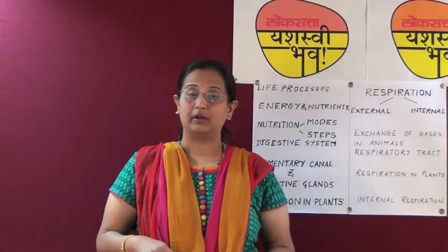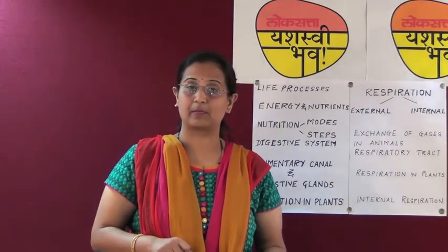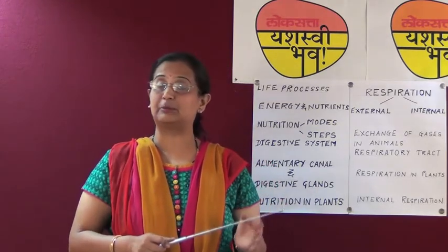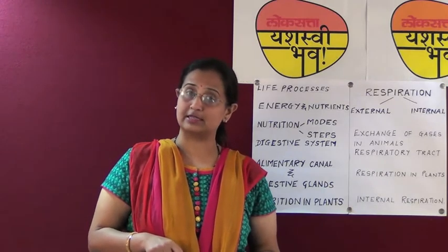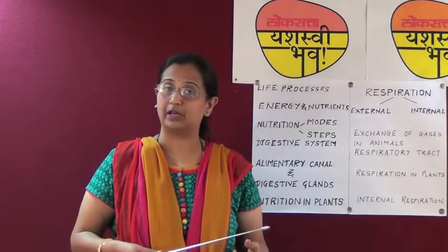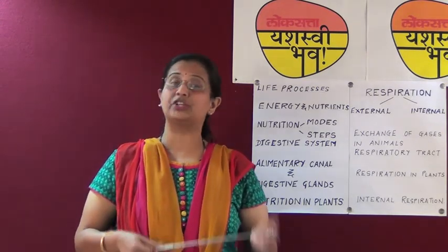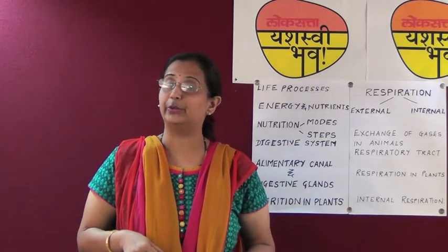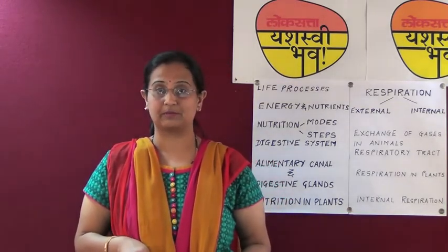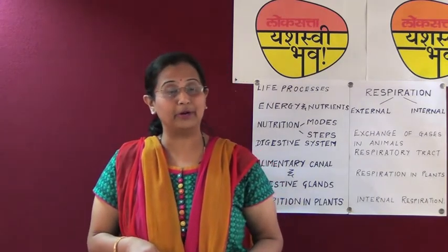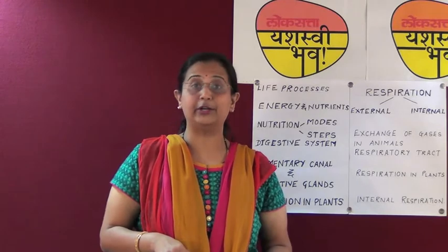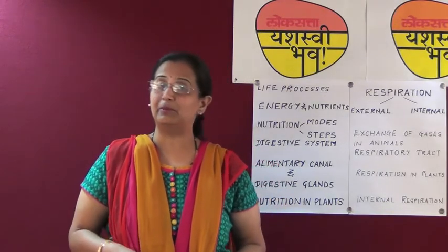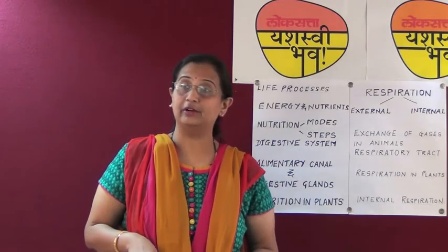Respiration in plants: in plants there is no special respiratory system. Diffusion of gases takes place through the stomata present on the leaves. In photosynthesis, carbon dioxide is taken in and oxygen is given out. During respiration, oxygen is taken in and carbon dioxide is given out. Photosynthesis can take place only during daytime, whereas respiration is a continuous process. This is why we should not keep plants in our bedroom during the night — during nighttime, only respiration takes place in plants, so the amount of carbon dioxide liberated is more, which can lead to suffocation.